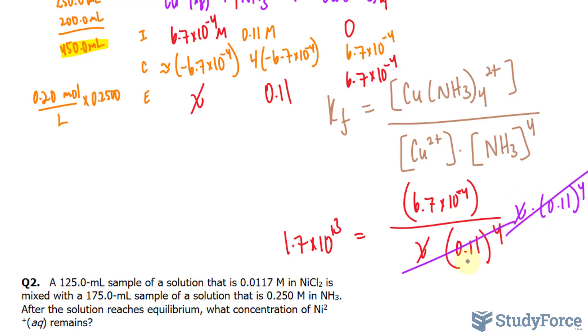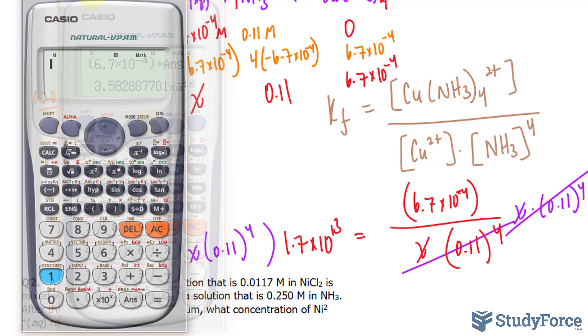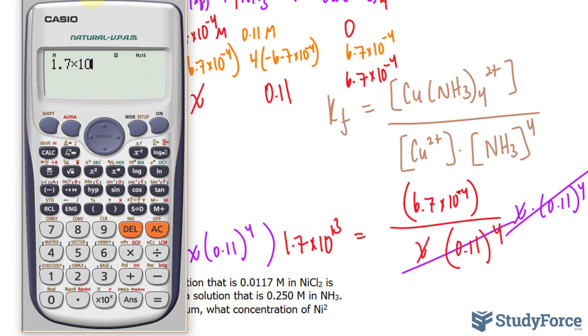I'll multiply 1.7 times 10 to the power of 13 by 0.11 raised to the power of 4. And I'll divide both sides of this equation by this large number.